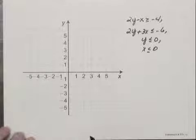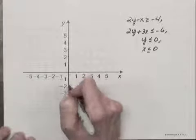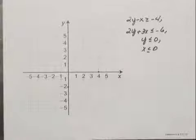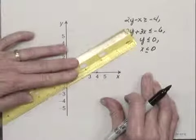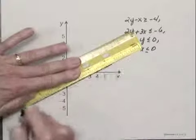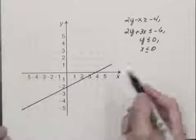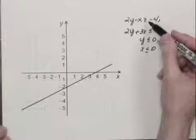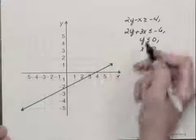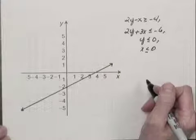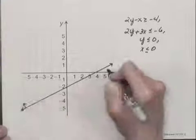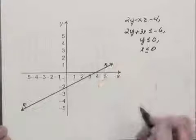The graph of the first related equation goes through 0, negative 2, and through 4, 0. And I'm going to draw all of these graphs with solid lines because the lines themselves are part of all these inequalities because all of the inequality symbols are either greater than or equal to or less than or equal to. And if I would test a point to see which half plane to shade for this inequality, I would find that it's the half plane above the line here.